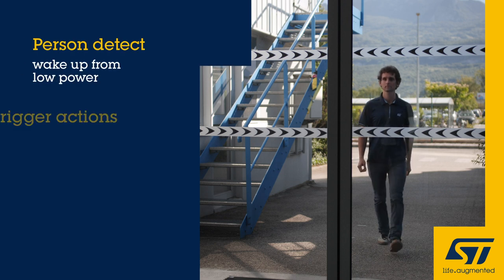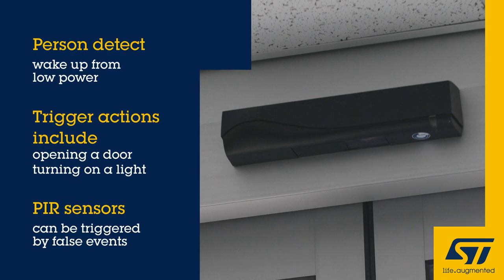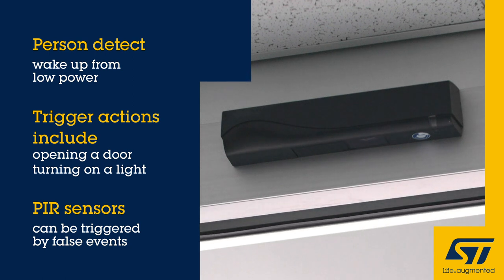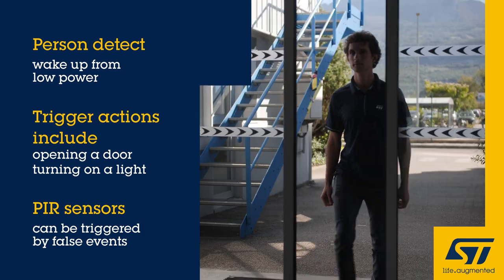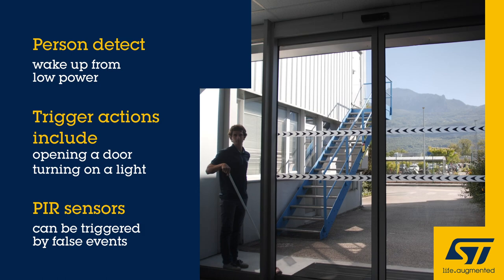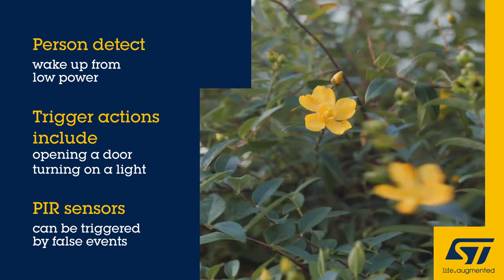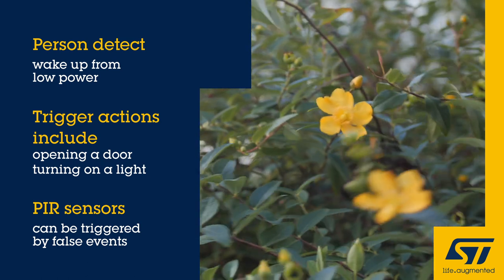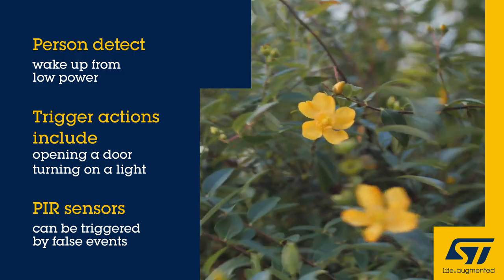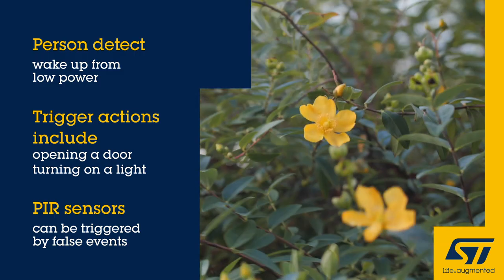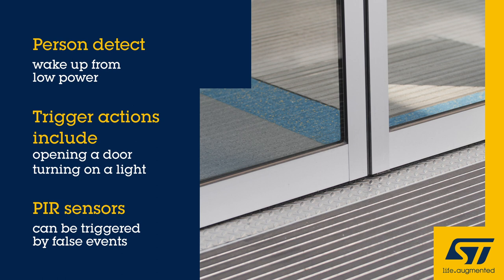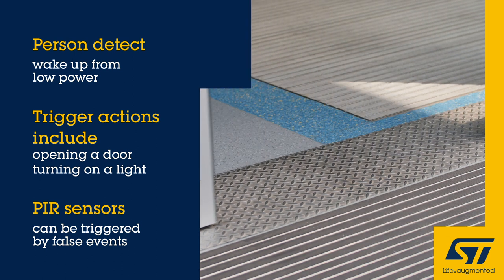Presence detection can be used to turn on a light, open a door, or any other personalized system. Such devices typically use passive infrared sensors to trigger an event when movement is detected. But the problem is that you don't always want your system triggered by movement — a cat passing by or a branch moving in the wind. You want to be sure that a human is present. Having too many false triggers can be a waste of resources, computing power, and energy.